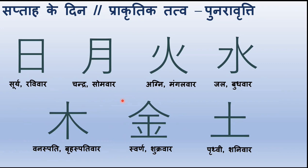Toh saptak ke jo din hain aur phir prakritik jo tatva hain, inki punaravritti karein. Kyunki ye saptak ke saat dinon ko darsha raha hai. Aaj ke part mein humne ye do kanji seekhi hain, lekin ye jo paanch kanji hain ye humne pahle seekhi hain — pahli kanji soori yaani Ravivar, doosri kanji Chandra yaani Somvar, teesri kanji Agni yaani Mangalvar, chauthi kanji Jal yaani Budhwar, vanaspati yaani Guruvar, Panchvi kanji. Aur aaj humne seekha Svarna yaani Shukravar, aur Prithvi yaani Shanivar. Is tarah se saptak ke saat dinon ke liye saat kanji is tarah prayog kiya jaata hai.